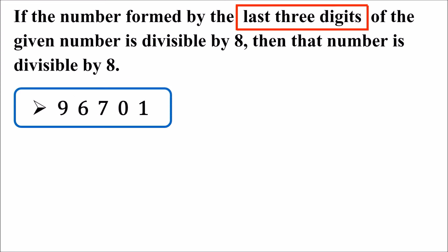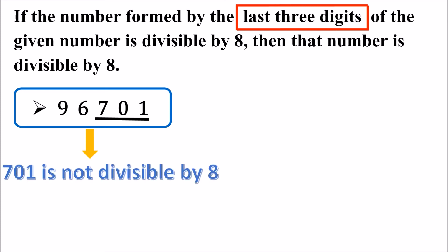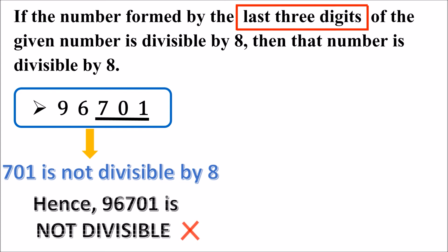Is this number divisible by 8? Let's see the last 3 digits of this number — that is 701. So the number formed by the last 3 digits is 701. Is 701 divisible by 8? No, 701 is not divisible by 8. Therefore, the given number is not divisible by 8.